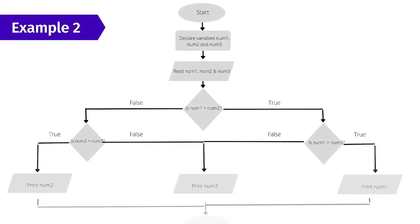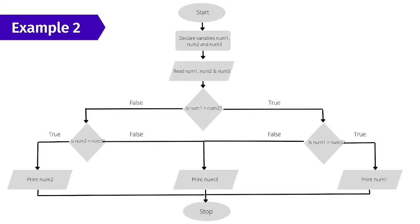As example two, let's consider finding the largest among three numbers using a flowchart. We start, declare variables num1, num2, and num3, and read three numbers as input. We check if num1 is greater than num2 — if true, we check if num1 is greater than num3: if true, print num1, otherwise print num3. If num1 greater than num2 is false, we check if num2 is greater than num3: if true, print num2, otherwise print num3. That is the end of this flowchart.